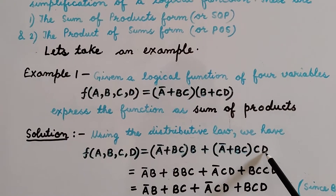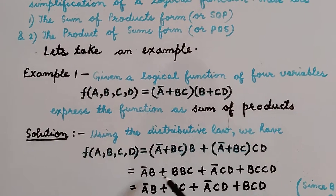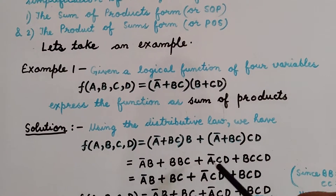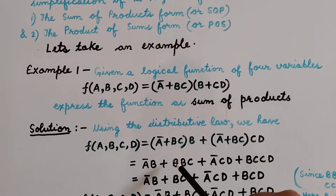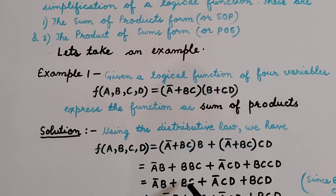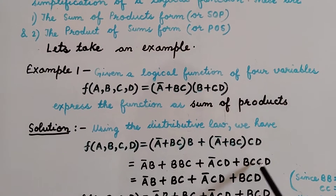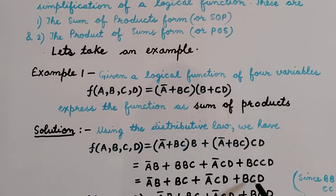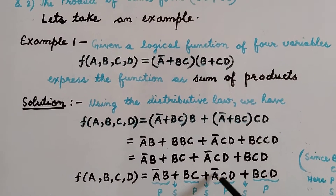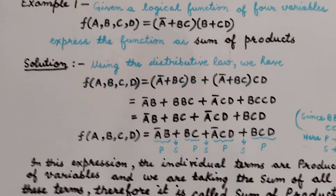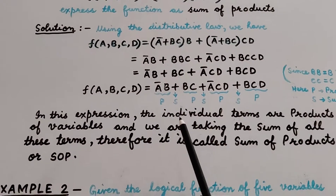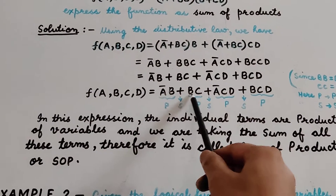When we simplify this expression, it comes out to be A complement·B + B·B·C·D + A complement·C·D + B·C·C·D. We find that variable B has been repeated twice, so we can eliminate one using B·B = B. Similarly, variable C has been repeated twice, so C·C = C. Our expression becomes F(A,B,C,D) = A complement·B + B·C + A complement·C·D + B·C·D.